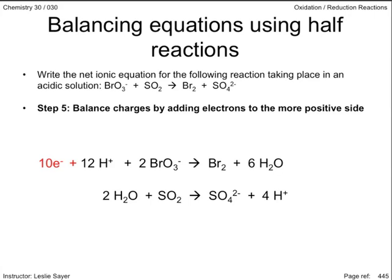The reactant side of the upper equation shows a net charge of a positive 10. That is, the 12 positive ions minus the two negative ions. The product side has a net charge of zero. So the side we need to add electrons on to equalize the charge is the more positive, in this case the reactant side. Likewise, the lower reaction has a greater positive charge on the product side and so is equalized with electrons.